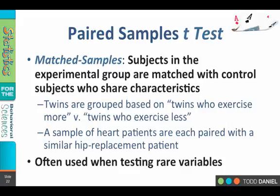This is very common with twin studies, where we put the twins into one of two groups. If the dependent variable we're studying is naturally occurring, maybe we just group the twins by the twin who exercises more and the twin who exercises less. Or perhaps we assign one twin to one group and the other twin to the second group, and we compare their scores on a dependent measure — each twin is being paired with the other.